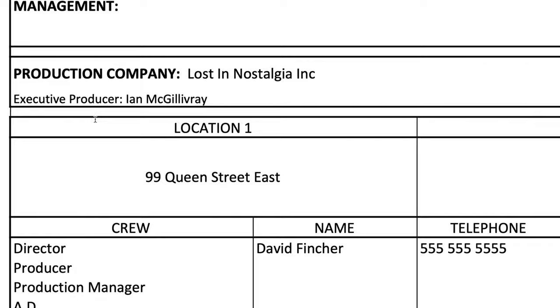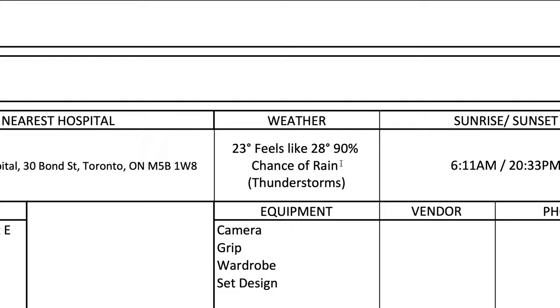First, let's break down the components of a call sheet. Typically you will have the following information: crew call time, crew contact info, location date, shoot date, the nearest hospital, the weather for that shoot date, the sunrise and sunset times of that day, and a map to set.